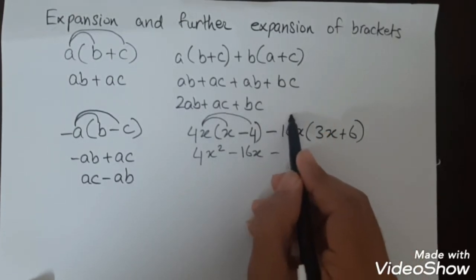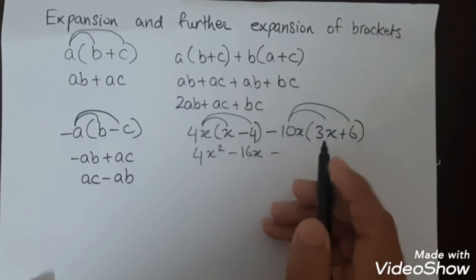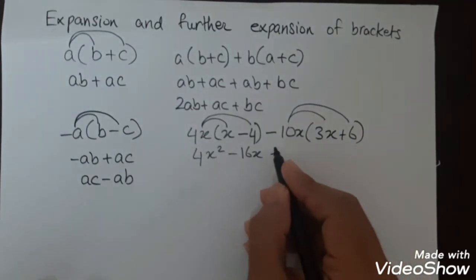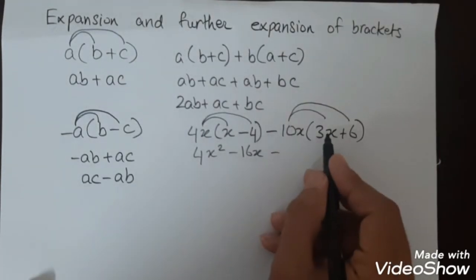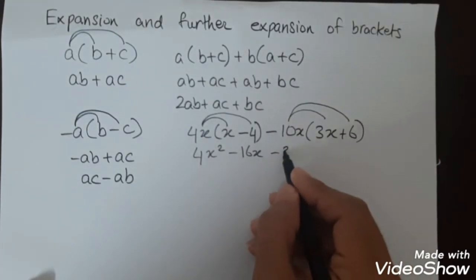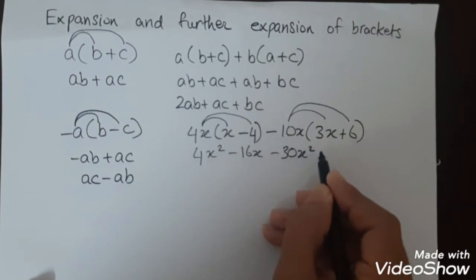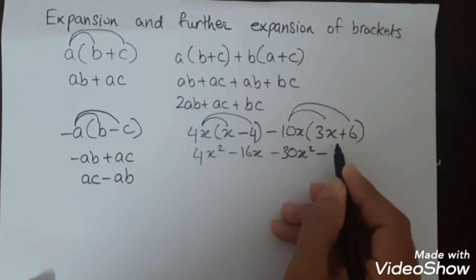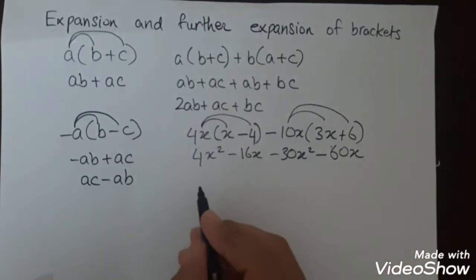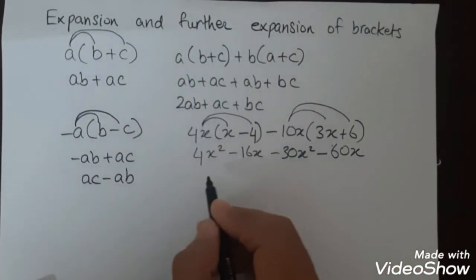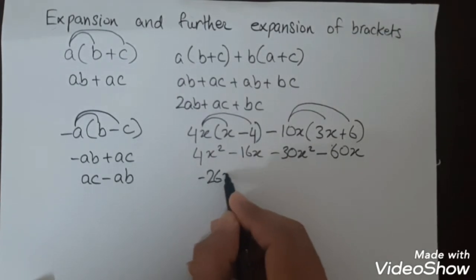Then -10x with 3x and -10x with 6. So this will be -10x times 3x, which is -30x², minus 60x. So 4x² minus 30x² will be -26x².